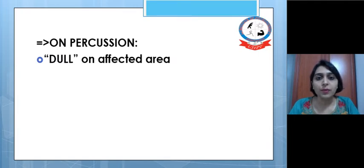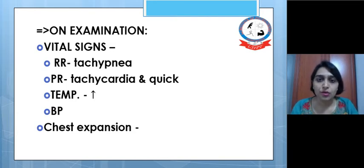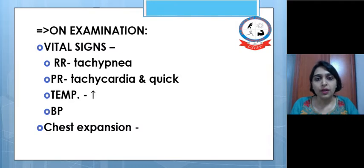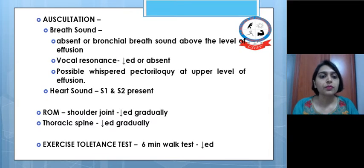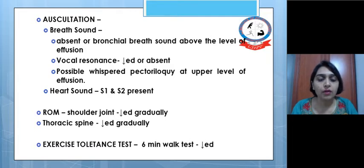On percussion, a dull note is found over the area of pleural effusion. On examination of vital signs, tachycardia and tachypnea are present, pulse is quick and rapid, and temperature is also high. Chest expansion should be measured at three levels during inspiration and expiration. On auscultation, breath sounds may be absent or show bronchial breath sounds above the level of effusion. Vocal resonance is usually reduced or absent, with possible whispering pectoriloquy at the upper level of the effusion. Heart sounds S1 and S2 are usually present.